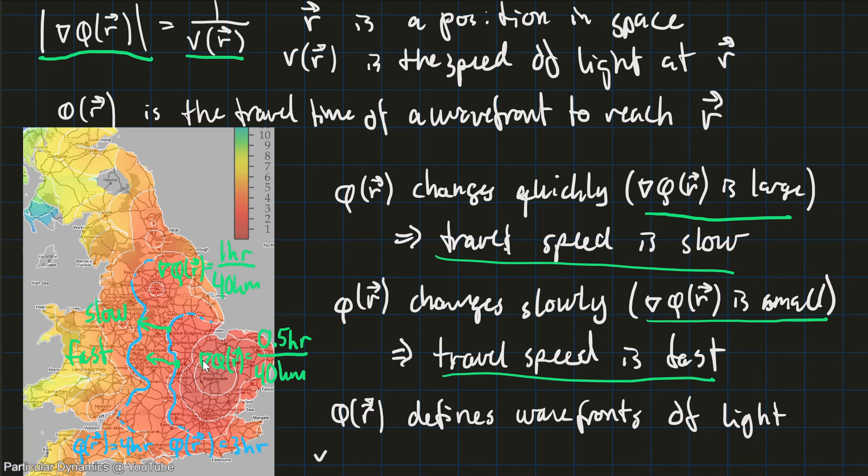Wherever Phi is constant, that represents a place where the light reaches at the same time. That's the front of the wave of the light. While the gradient of Phi of R defines what we call rays. It defines rays of light. That is the direction that the light propagates and the rays of light are always perpendicular to the wavefronts.